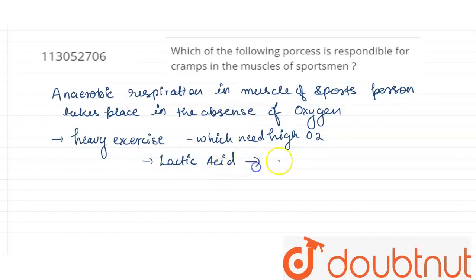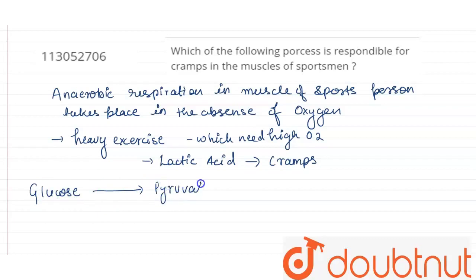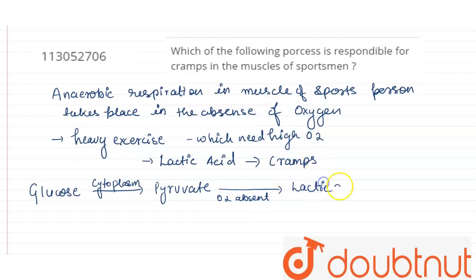Due to the formation of this lactic acid, the sports person experiences muscular cramps. Now, there is a compound named glucose which breaks down into pyruvate. The glucose to pyruvate conversion takes place in the cytoplasm of the cell. Now in the absence of oxygen, this pyruvate molecule breaks down into lactic acid. Lactic acid in the muscles of the sports person causes muscular cramp, and this conversion from pyruvate to lactic acid takes place in the cytoplasm of muscle cells.